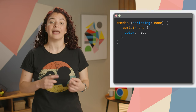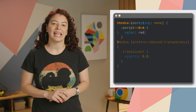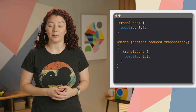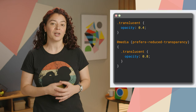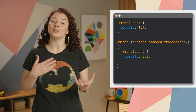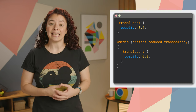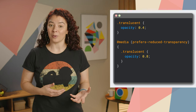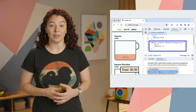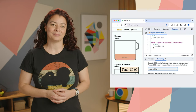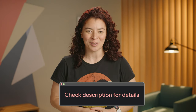The available values are: enabled, initial-only, or none. Another value you can test with media queries is prefers-reduced-transparency, which lets you adapt web content to the user-selected preference for reduced transparency in the operating system, such as the reduced transparency setting on macOS. Valid options are reduced or no-preference. And you can check how it looks with DevTools. Check out the article in the description for the scripting and prefers-reduced-transparency media features documentation.